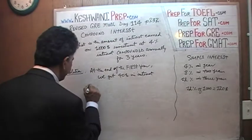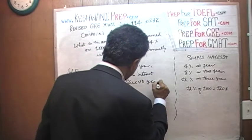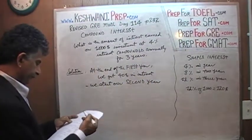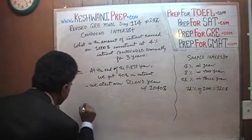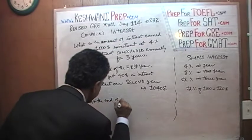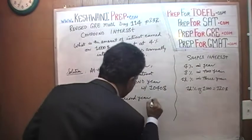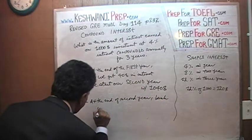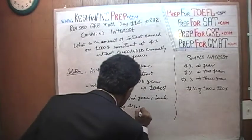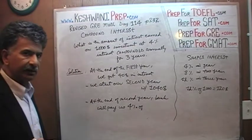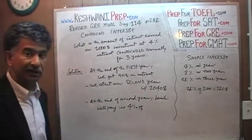We start our second year with $1,040. At the end of the second year, the bank will pay us another 4%, not of the original $1,000 that we invested, but of $1,040 that we started our second year with.